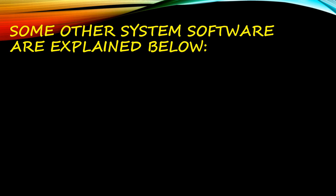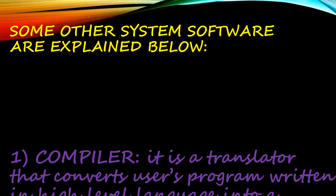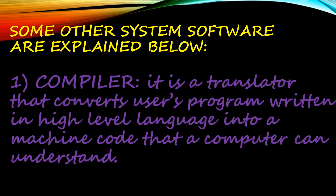Now, on the basis of the examples given, let us discuss about some other system software. First, compiler. A compiler is a translator that converts a user's program written in high-level language into machine code that a computer can understand.